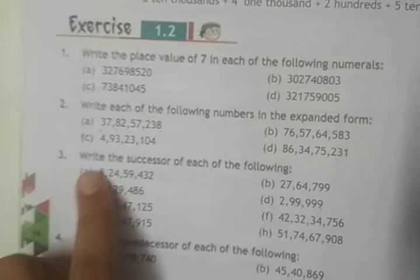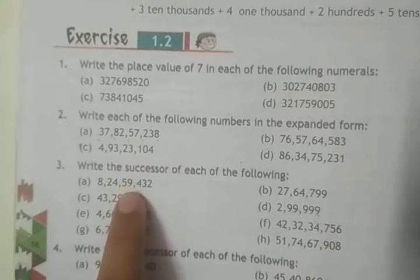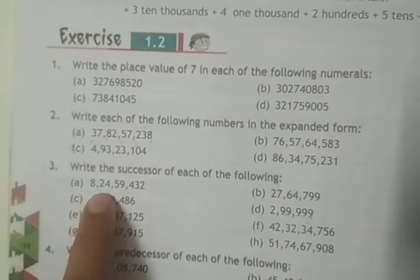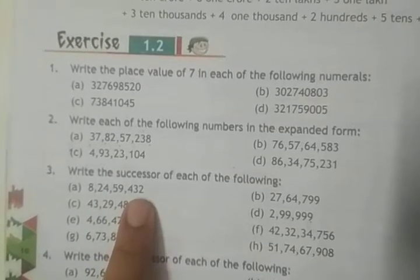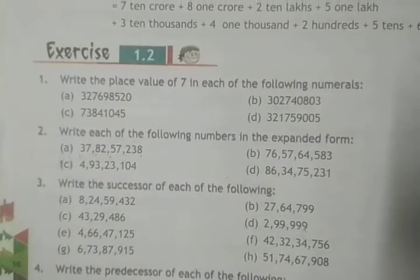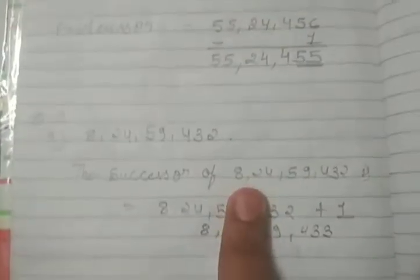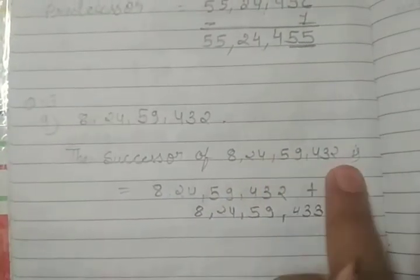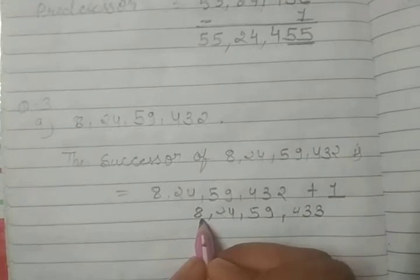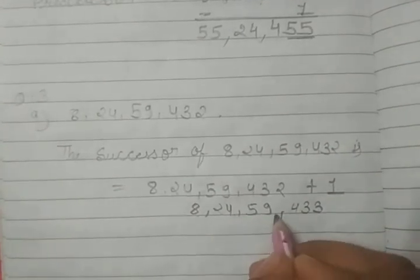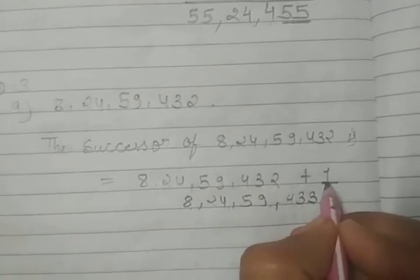In question number 3, write the successor of each of the following. In successor, we add plus 1. The first number is 8,24,59,432. We will add plus 1 to this number.